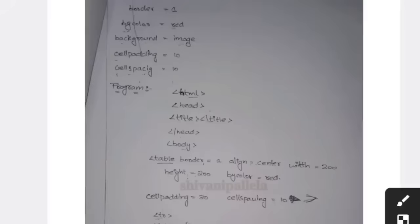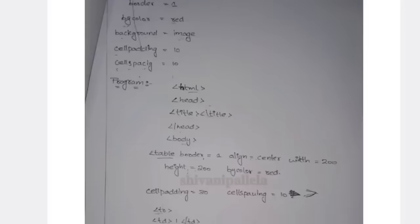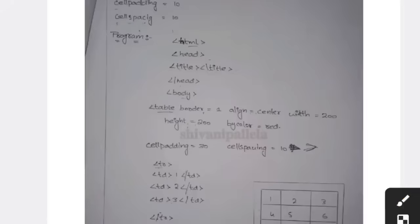The last one is program. How you will remember? HTML, head, title open, title close. If you want to give title here in middle you need to write it. Head close, body open. After that you need to write the table. Whatever the properties you are having, you need to write it here - border, align, width, bgcolor, background, cellpadding, everything you can write it. And after writing that you close that thing. Bracket open, bracket close, like this you need to do.